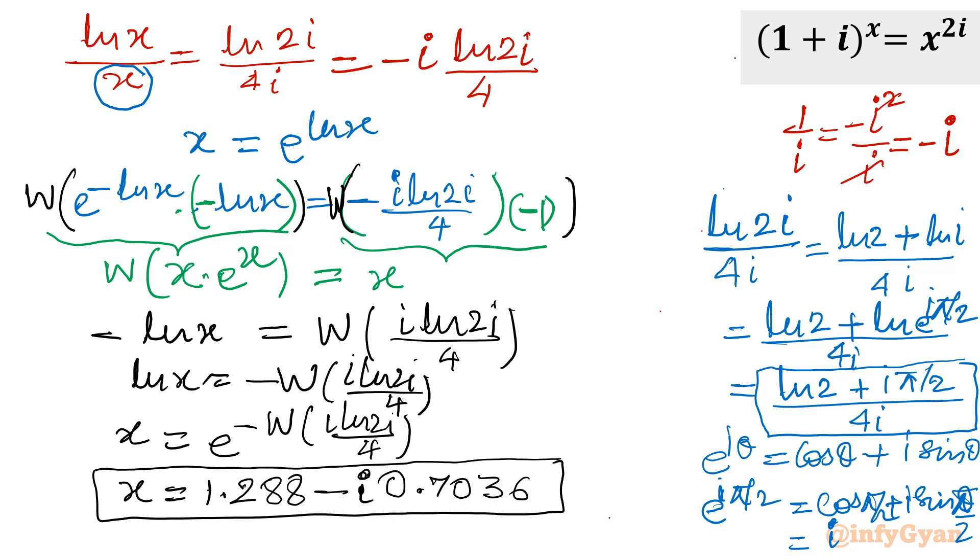If I will put in place of theta, see this theta. If I will put in place of theta, we can write theta plus 2k pi. So we will have infinite number of solutions.